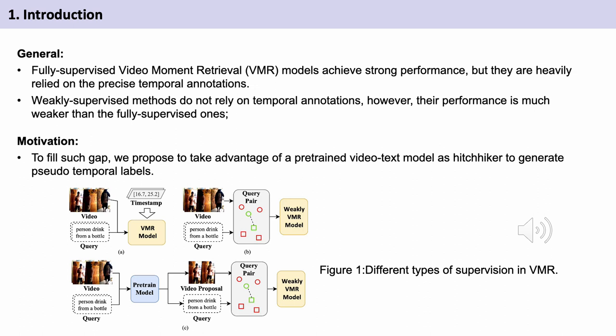To fill such gap, we propose to take advantage of a pre-trained video text model as hitchhiker to generate pseudo-temporal labels. The pseudo-temporal labels, together with the descriptive labels, are then utilized to guide the training of the proposed VMR model.